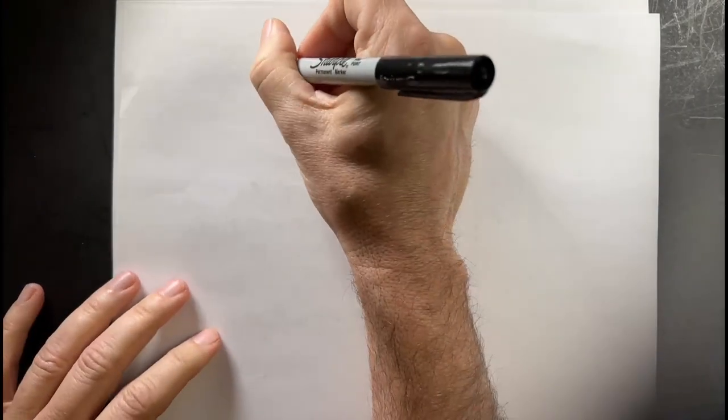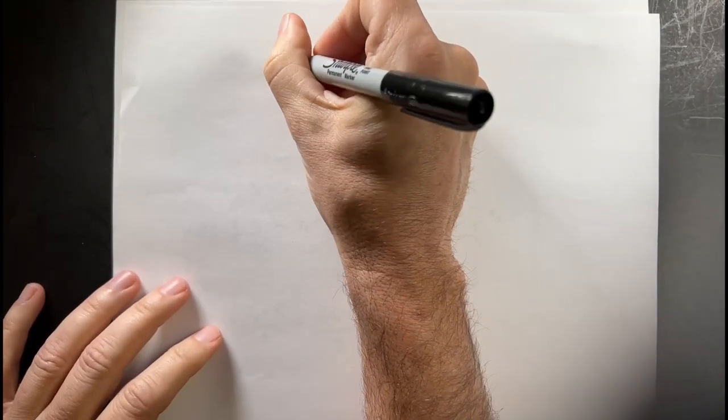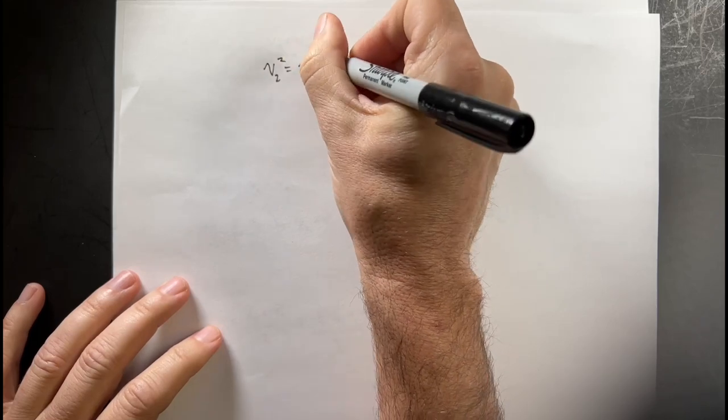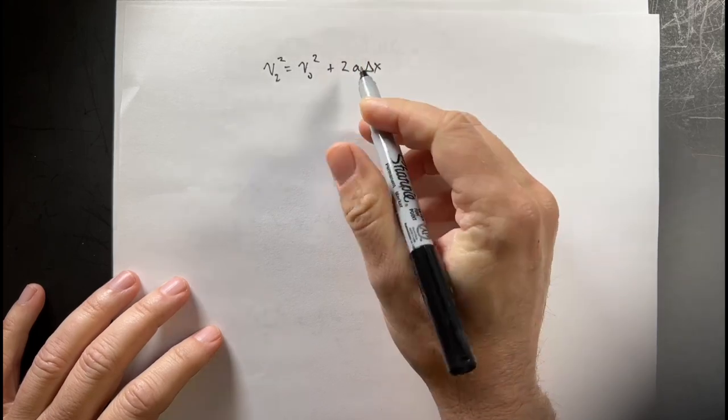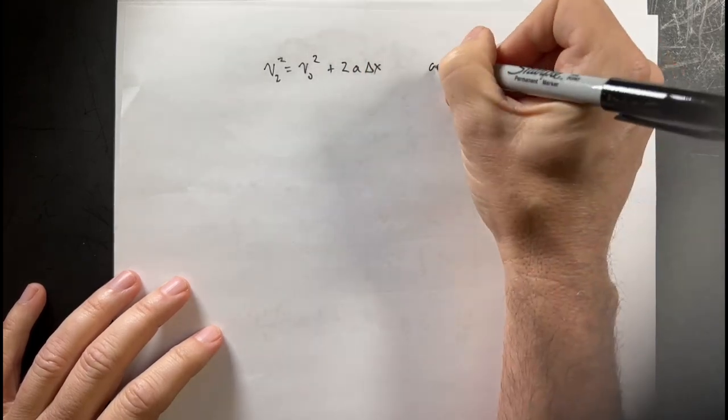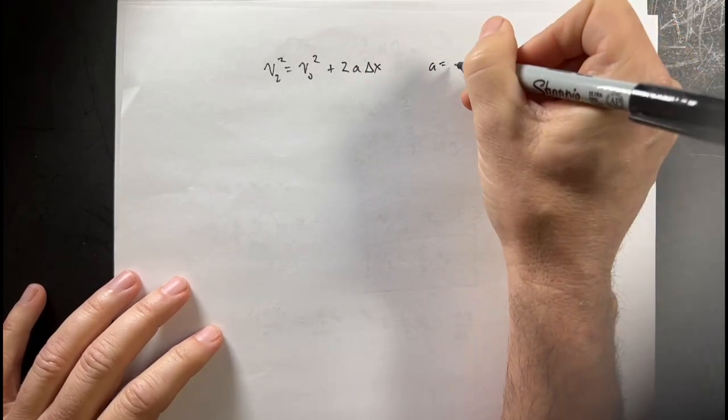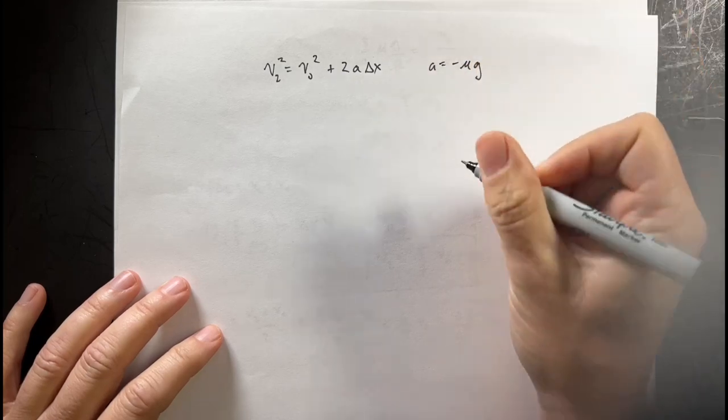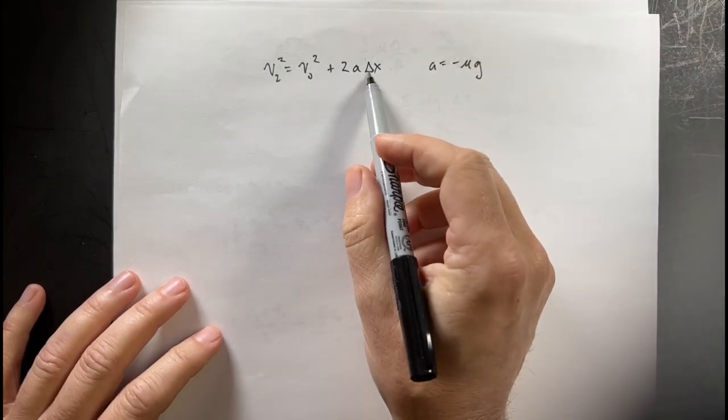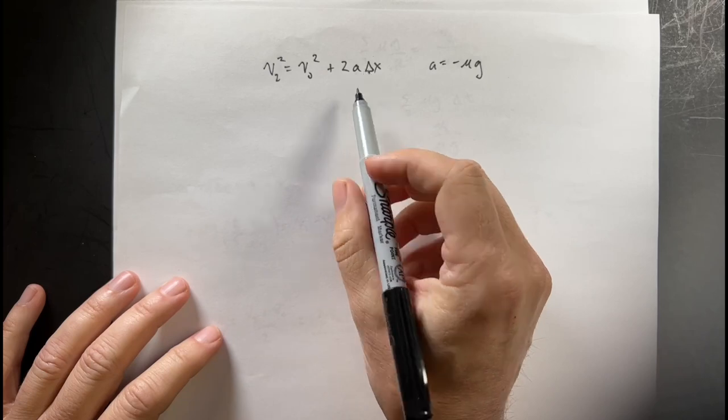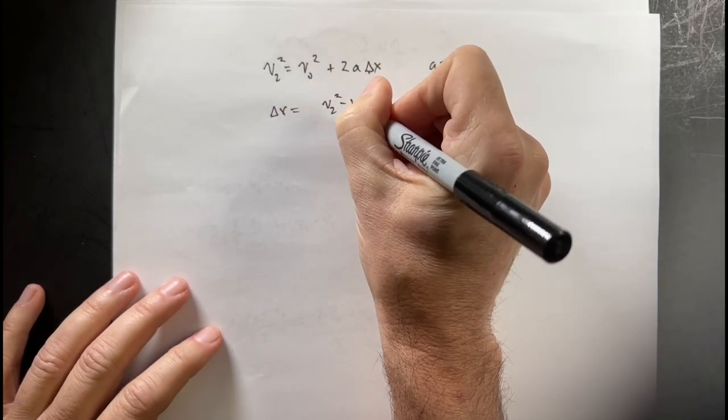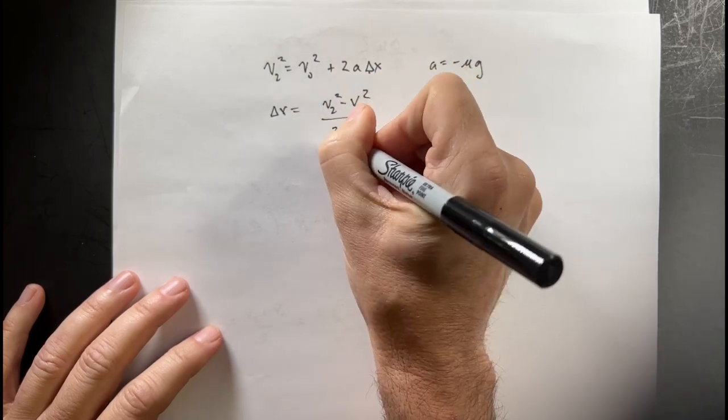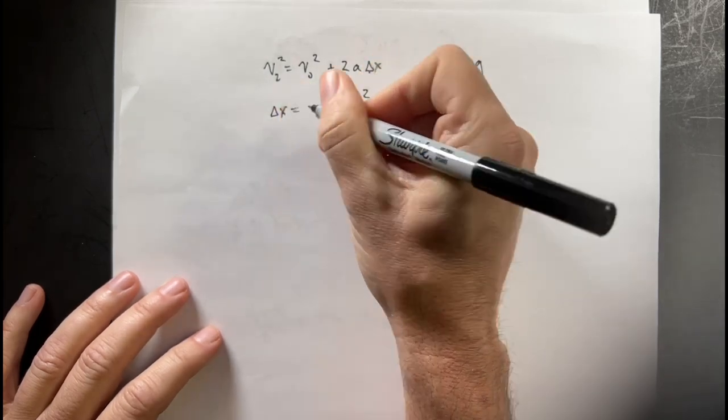So, I have this kinematic equation. V2 squared equals V0 squared plus 2A delta X. So, I know A, A is negative mu G. I want to solve, I know all these things. I want to solve for delta X, which is D. So, delta X equals V2 squared minus V0 squared, all of that over 2A. And that's going to be D.